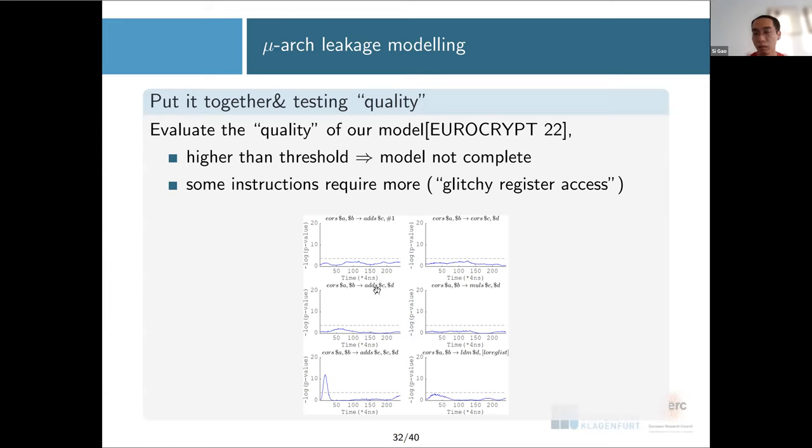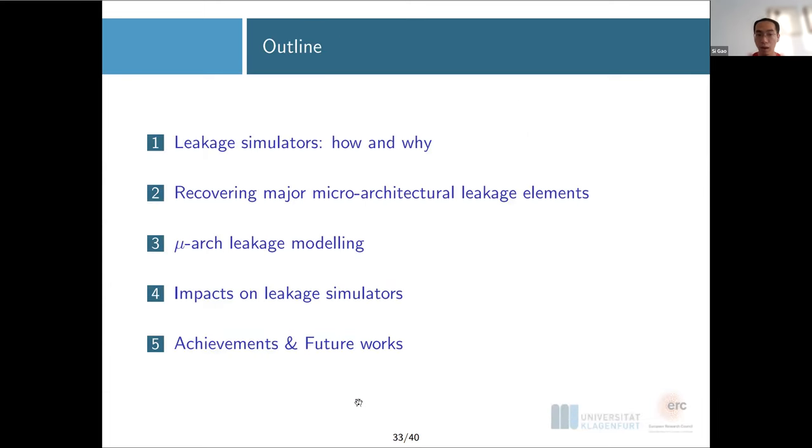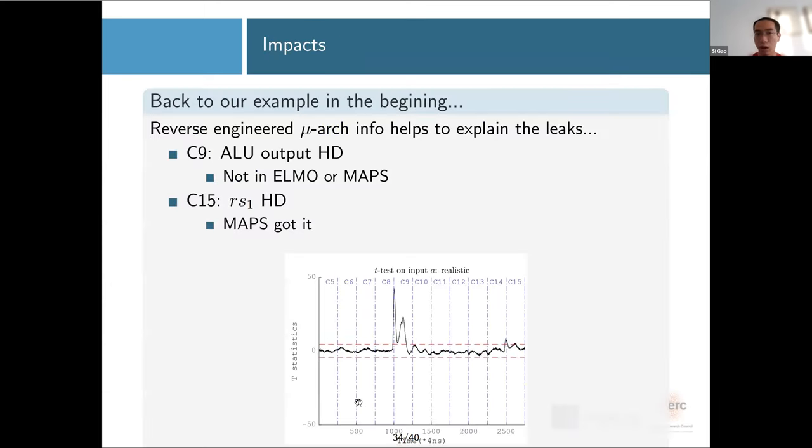So adding them all together, we have our overall leakage model, and then we're going to test the quality of the model with our completeness test. Within these all six instructions, we find most of them seem to be okay. There's one of them you see something above this dash line, which means you are still missing something. So I will directly tell you: this is what I call the glitchy register access. It shouldn't really access this register, but there's some glitches in your decoding stage. If you're adding that to your consideration, then this will be below this threshold.